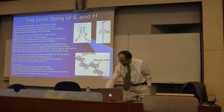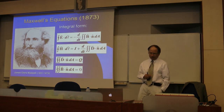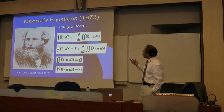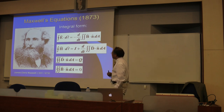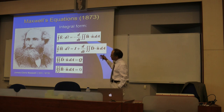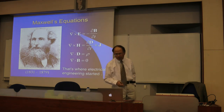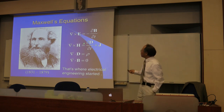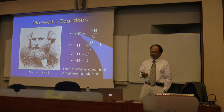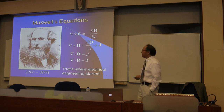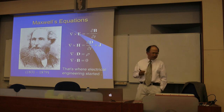That led to his second prediction that light is a special form of electromagnetic field. Both predictions were experimentally verified by Heinrich Hertz a few years later. These discoveries form today's Maxwell's equations. Using vector identities and integral theorems, we can convert Maxwell's equations into differential form. These were published about 150 years ago, so electromagnetic theory is at least 150 years old.